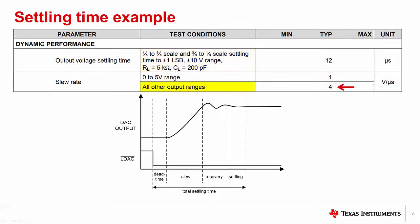We see that the slew rate for this range is 4 volts per microsecond. Seeing as we have a 10 volt step we can calculate that the slew time is 10 volts over 4 volts per microsecond or 2.5 microseconds total. The total settling time is 12 microseconds. This means that 9.5 microseconds are attributed to dead time, recovery, and settling periods of the DAC output transition.